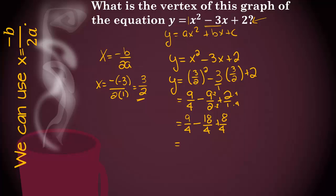Let's keep going. We're almost done. 9 minus 8 is negative 9 over 4 plus 8 over 4. Negative 9 plus 8 is negative 1 over 4. And it turns out that that is my y value. So the vertex for this graph is 3 halves negative 1 fourth.